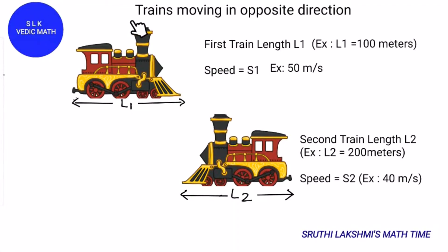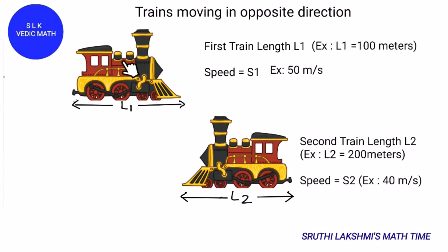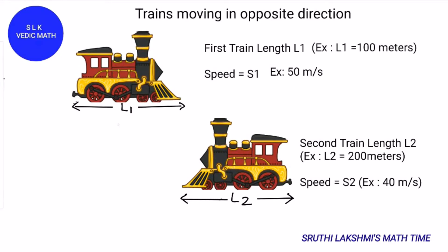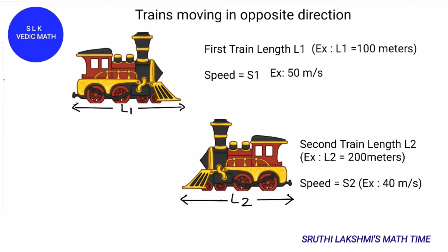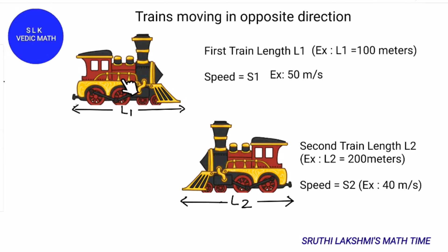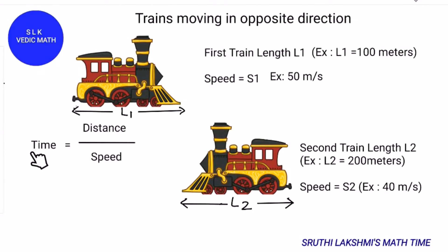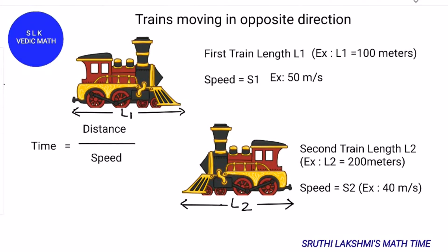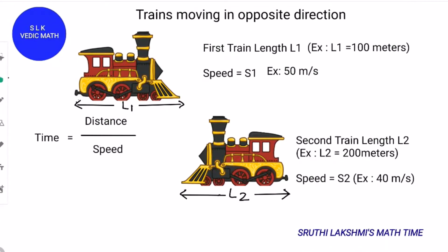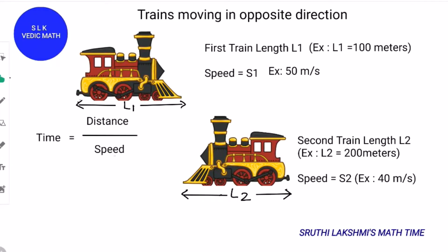Today we're going to focus on trains moving in opposite directions. As you see, these two trains are moving in opposite directions — this train is moving right and this train is moving left. The length of the first train is L1 and the length of the second train is L2. The first train's speed is S1 and the second train's speed is S2. The formula is: time equals distance divided by speed, and they will give you two of the three values and ask you to find the third.